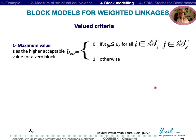For weighted links, one can use value criteria. The maximum value criterion is analogous to the 0 block for dichotomous relations.